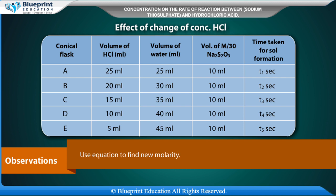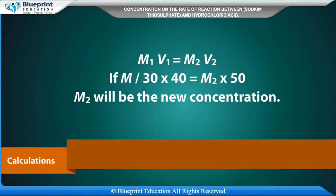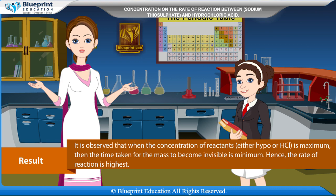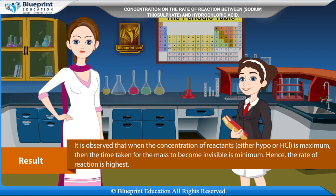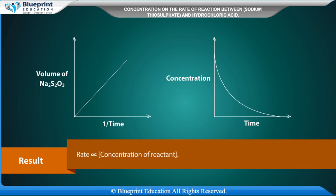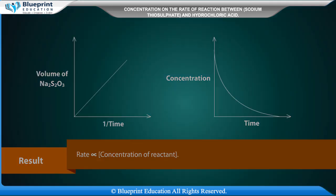Use the equation M1V1 = M2V2 to find the new molarity. Calculation: M/30 × 40 = M2 × 50; M2 will be the new concentration. Result: It is observed that when the concentration of reactants — either hypo or HCl — is maximum, the time taken for the mark to become invisible is minimum. Hence, the rate of reaction is highest. Rate is directly proportional to concentration of reactant.